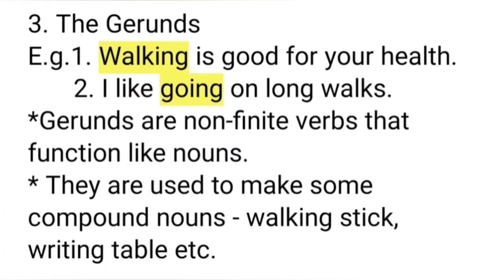Third type: gerunds. See the examples: 'Walking is good for your health.' 'I like going on long walks.' If we take the example 'Walking is good for your health,' we can ask: what is good for your health? The answer is 'walking.' Thus, 'walking' here functions like a noun. At the same time, it is a verb. Such verbs are called gerunds — they are also called verbal nouns. We should remember that present participles function like adjectives and gerunds function like nouns.